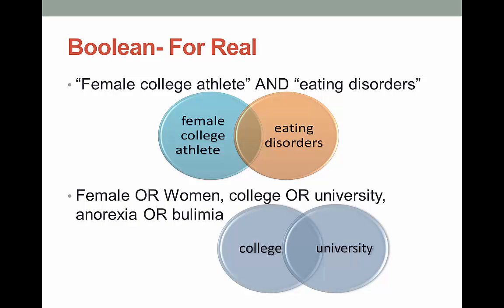The guacamole example is delicious but it's a little bit silly, so let's go back and see how Boolean works with a real search. When we use AND here, we're telling the database or catalog that we are only interested in books or articles that are about both female college athletes and eating disorders. AND makes your search smaller, so even though there may be 400 articles on female college athletes and 2,000 articles on eating disorders, you might only get 25 when you combine the two.